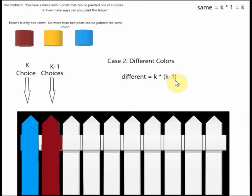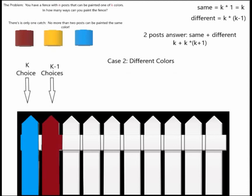We can either make the posts the same color or different, so we have to add these two values together. The number of ways to make the posts the same plus the number of ways to make them different gives us the answer. So far we have the answer for two posts: same plus different, which is K plus K times K minus one.